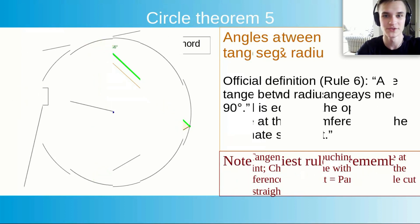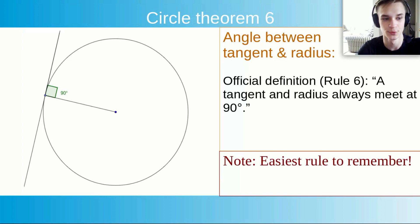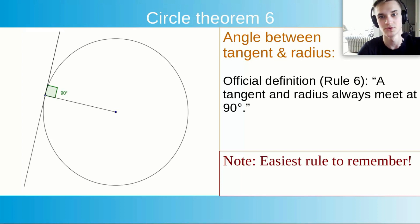Circle theorem 6: Angle between tangent and radius. The official definition is: a tangent and radius always meet at 90 degrees. This is the easiest rule to remember. Where there's a tangent and a radius coming towards it, it's always going to be at a 90 degree angle.